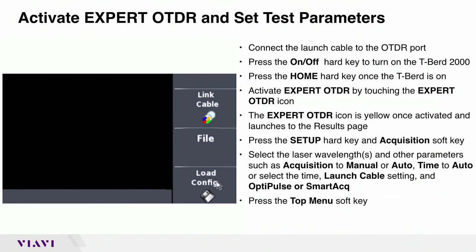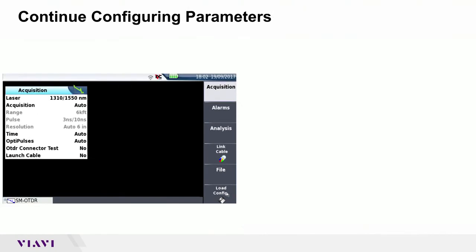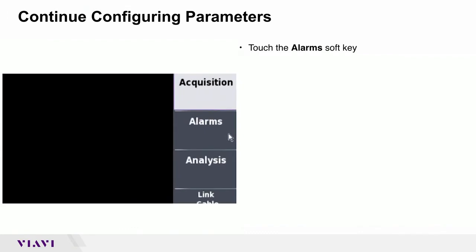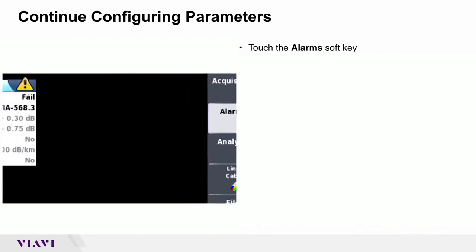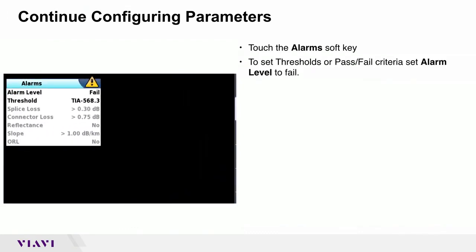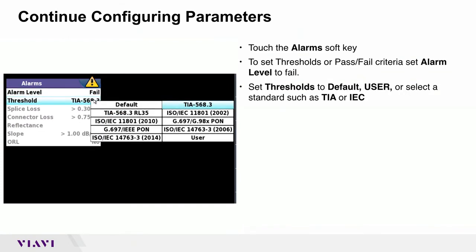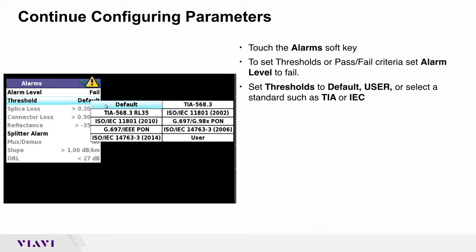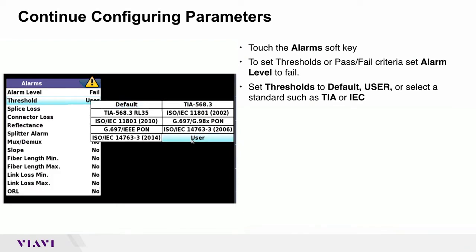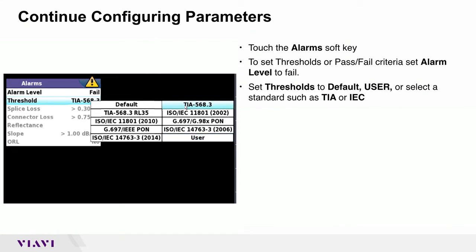Press the TOP MENU soft key and touch the ALARMS soft key. To set thresholds or pass-fail criteria, set ALARM LEVEL to FAIL. Set thresholds to DEFAULT, USER, or select a standard such as TIA or IEC.